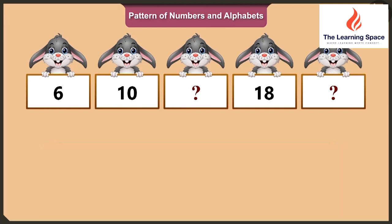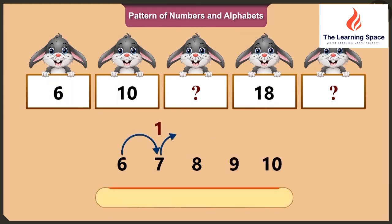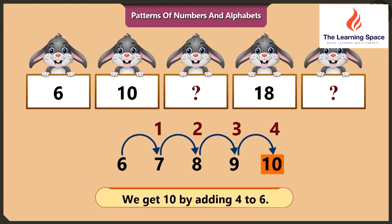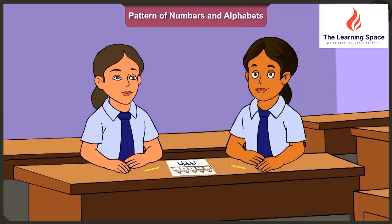In this pattern, the numbers are listed in ascending order. As per the pattern, ten comes after six. While counting numbers after six, we have seven, eight, nine, and ten. Hence, on adding one, two, three, four to six, we get ten.